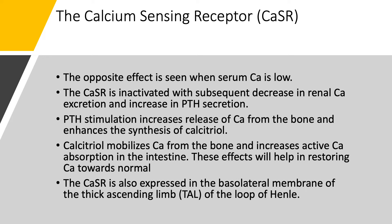The opposite happens when calcium is low: the calcium-sensing receptor is inactivated. When inactivated, there is a decrease in renal calcium excretion because you need that calcium and don't want to excrete it in the urine. PTH secretion increases — when PTH is stimulated, you get more calcium release from the bone and increased synthesis of calcitriol. Calcitriol then mobilizes calcium from the bone and increases active absorption of calcium and phosphorus in the intestine. These effects restore calcium towards normal. The calcium-sensing receptor is also found in the basolateral membranes of the thick ascending limb of the loop of Henle.